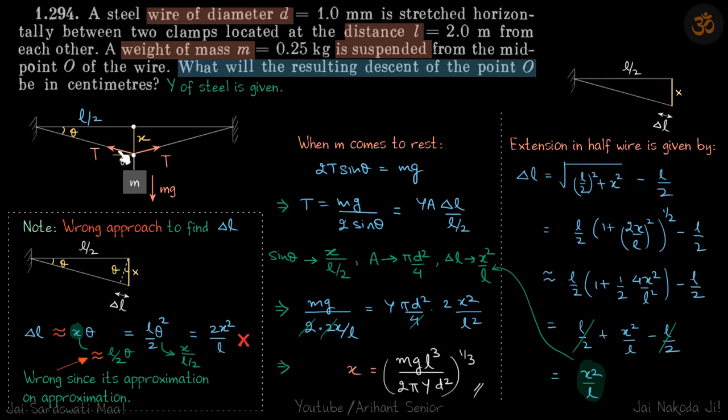If you do that, you will get delta L equals L theta square by 2, and then you can write theta as X upon L by 2 again. You will get the answer as 2X square by L, which is wrong because the right answer is X square by L. The mistake here is when you write delta L equals X theta, that is already an approximation.